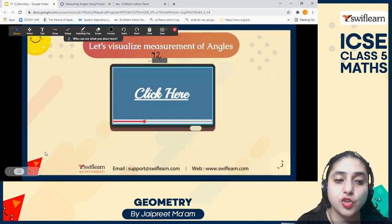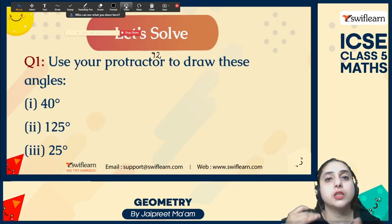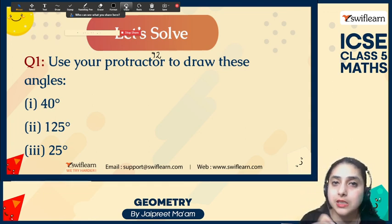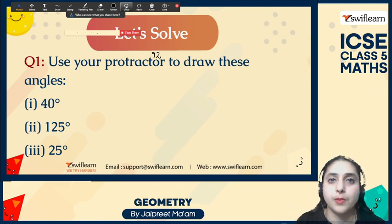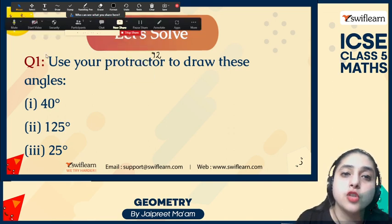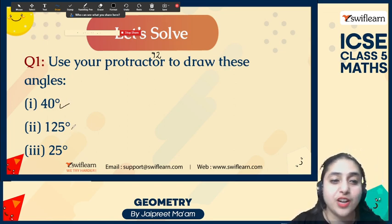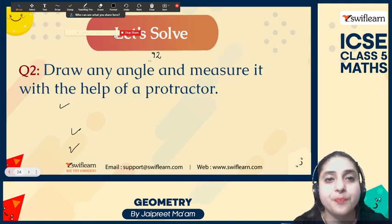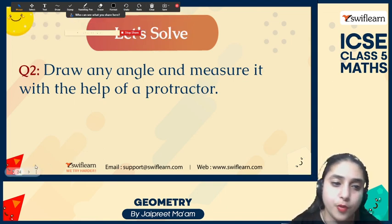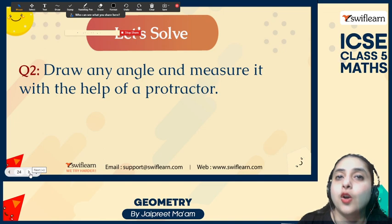This is how we measure an angle. It's very important to know how to place the protractor — the vertex should be at the center point, where the baseline meets at 90 degrees, and the base line should coincide with 0. For your homework: use your protractor to draw angles of 40 degrees, an obtuse angle, and another acute angle. Draw any random angle with a ruler, then measure it with the protractor and write your answer in the comment box.